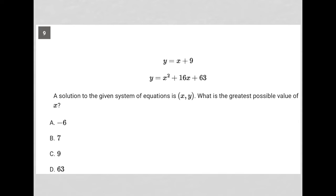This question starts off by providing us with a system of equations. We have y equals x plus 9. We also have y equals x squared plus 16x plus 63. The question goes on to say a solution to the given system of equations is (x, y). What is the greatest possible value of x?